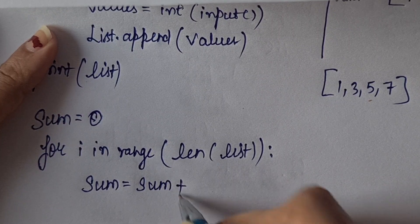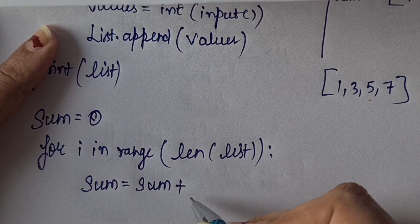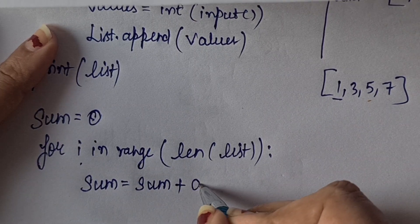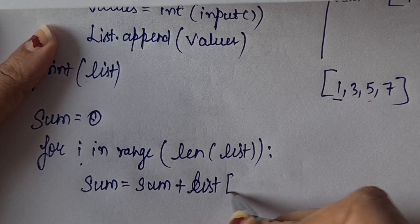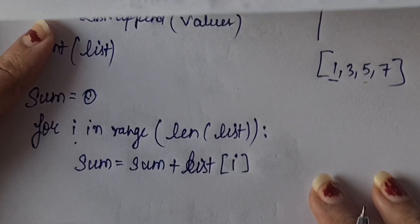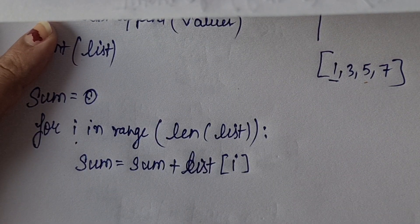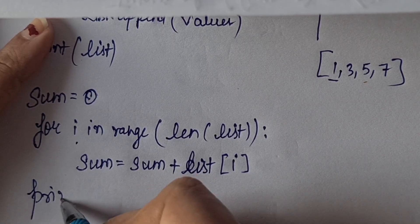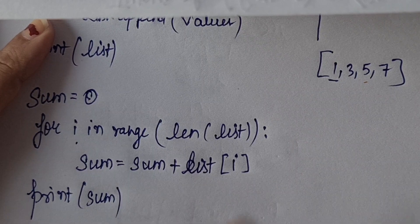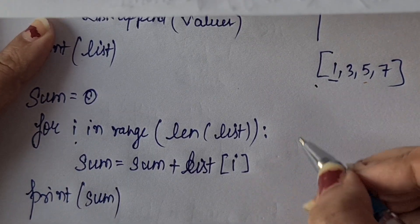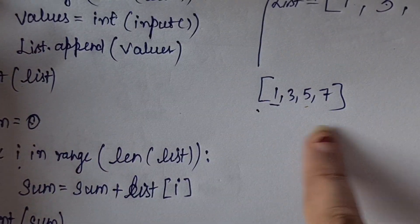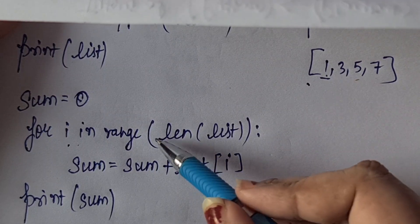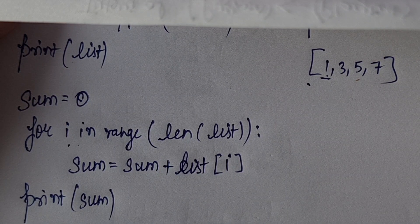So for i in range len of list, now sum equals sum plus - sum value starts at 0, plus obviously index i, but how to access it? It will be list of i. So list of i will be used: sum equals sum plus list of i.